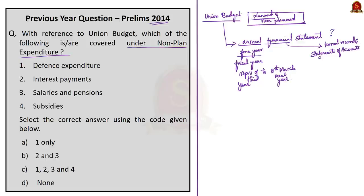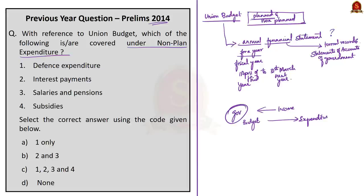To explain with an example: if you are working, you get a monthly income and plan expenditure accordingly. Likewise, the government plans its expenditure based on its income for a financial year. So if the government plans budget for 2020, it is actually planning for 1st April 2022 to 31st March 2023 — it contains estimated receipts and expenditure for that period. Remember, receipts is another word for income.